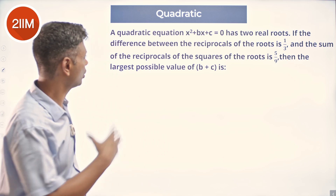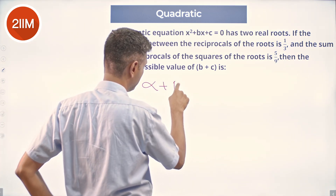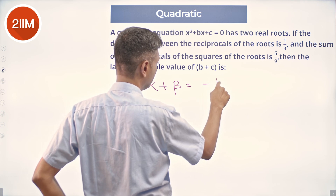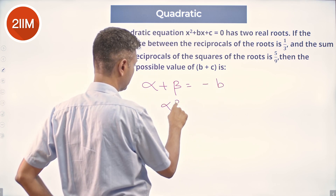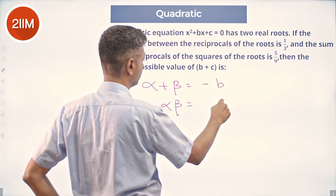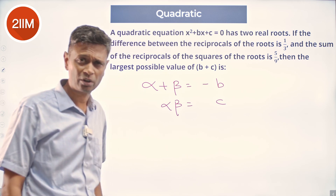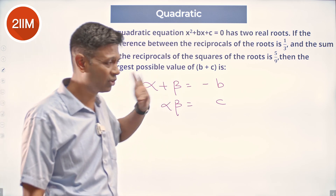We have the roots to be alpha and beta. We know alpha + beta = −b and alpha·beta = c. The sum of the roots is −b/a and the product of the roots is c/a, where a = 1.